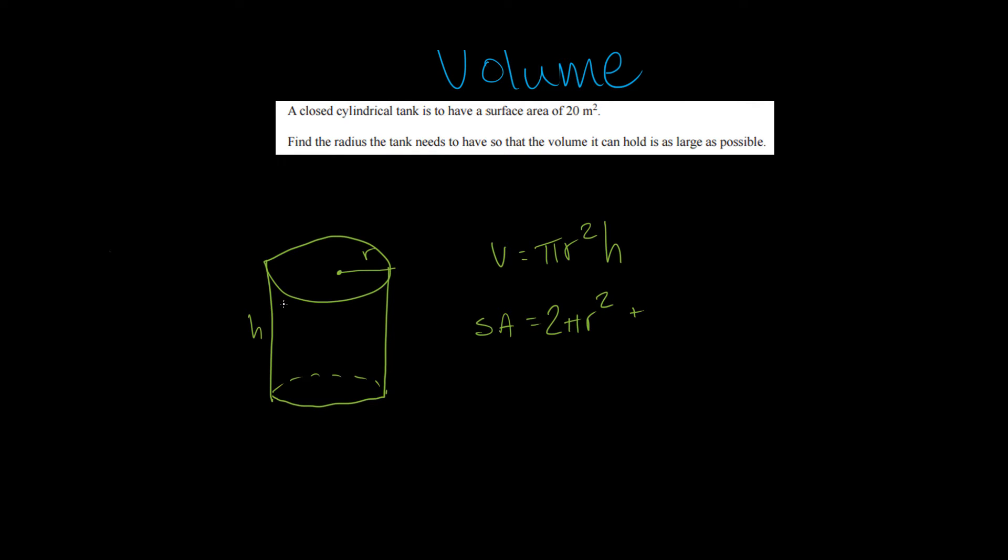Now we also have this face right here, the one that kind of goes around. Now if I were to unroll it, let's say from this point, I would actually end up with a rectangle. Now with my rectangle, my height h is just going to be this same h right here. And this length, well that length is just going to be this circumference. So my area of the rectangle is actually just the circumference times the height. So what's the circumference? Well that's 2 pi r times h.